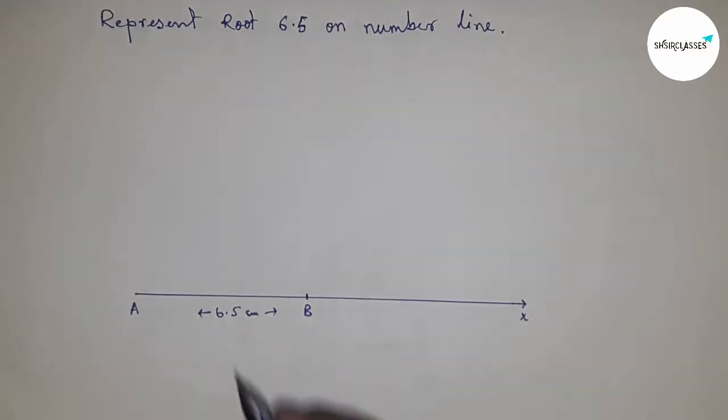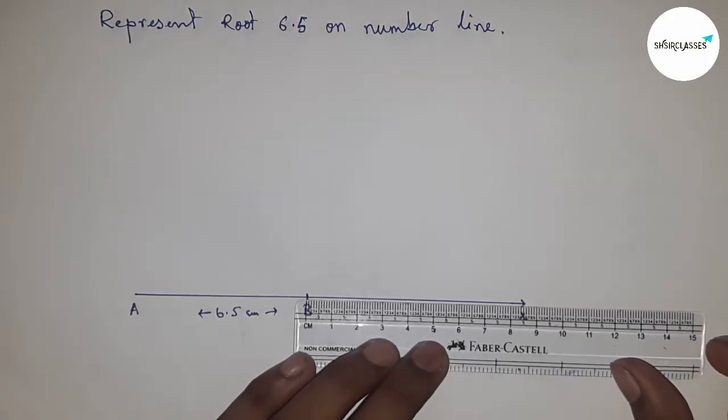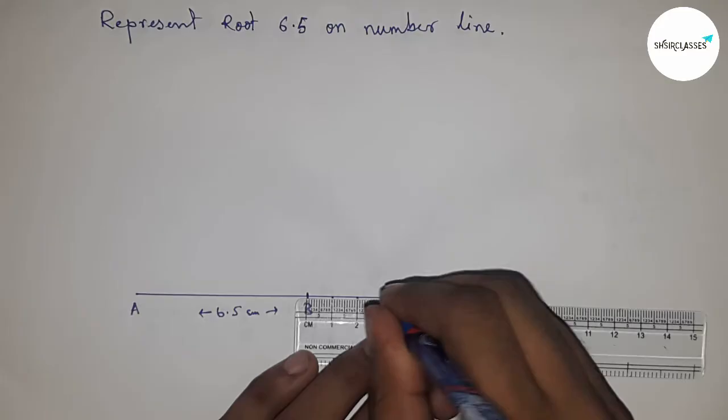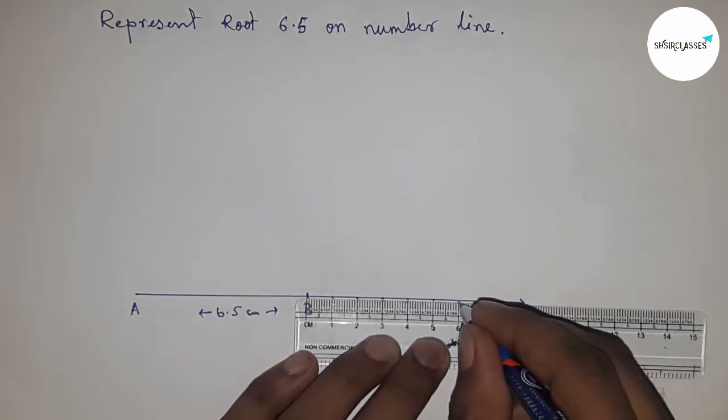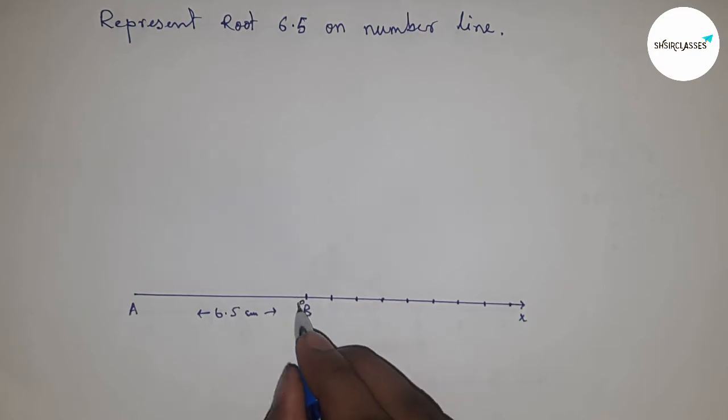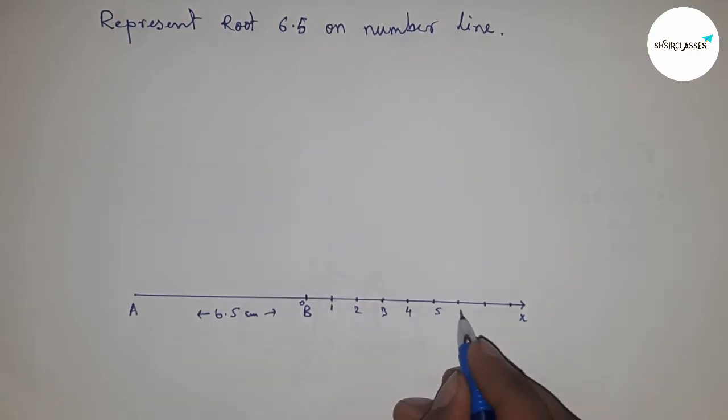Next, mark the numbers on the line from B to X: 0, 1, 2, 3, 4, 5, 6, 7, 8. This is point C. Next, we need to bisect the line AC.